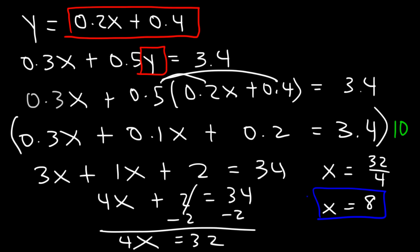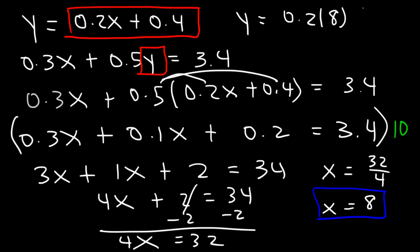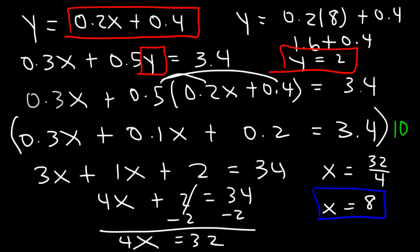Now I'm going to take this value and plug it into the first equation to get the value of y. So y equals 0.2 times 8 plus 0.4. 0.2 times 8 is 1.6. 1.6 plus 0.4 is 2. So y equals 2. So the answer is x equals 8, y equals 2.